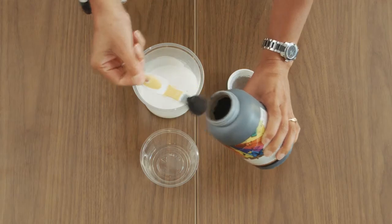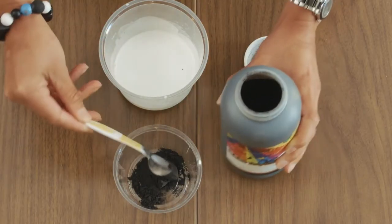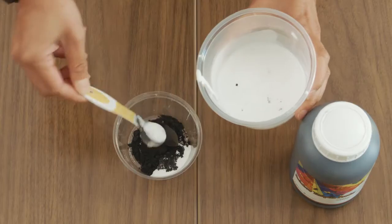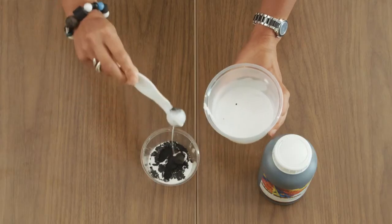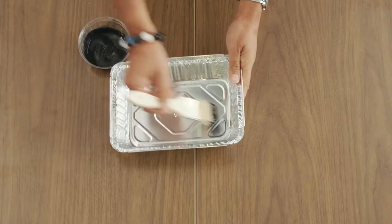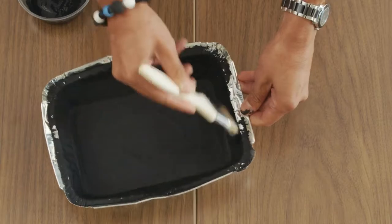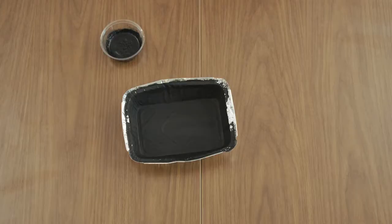In the plastic container, mix two teaspoons of black tempera paint with three teaspoons of the glue mixture. Apply the black paint evenly over the inside of the aluminum foil tin, ensuring full coverage. Set this aside to dry.